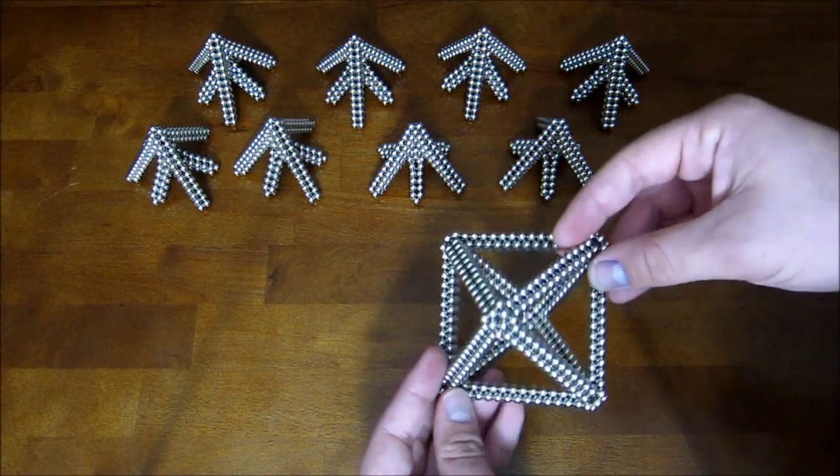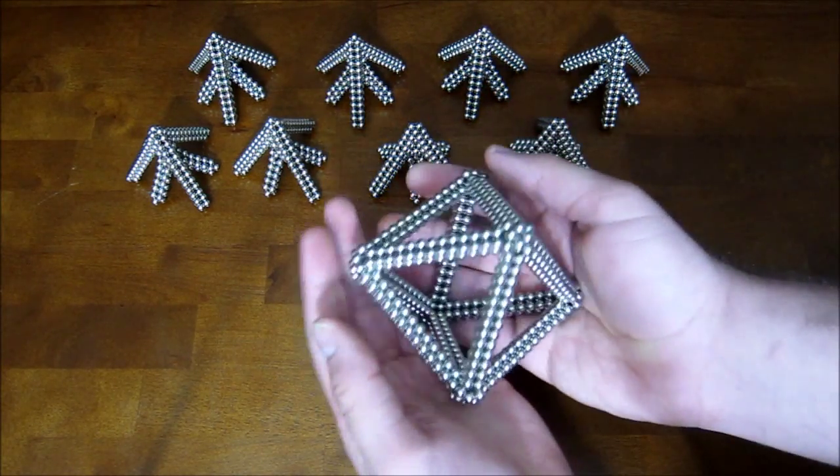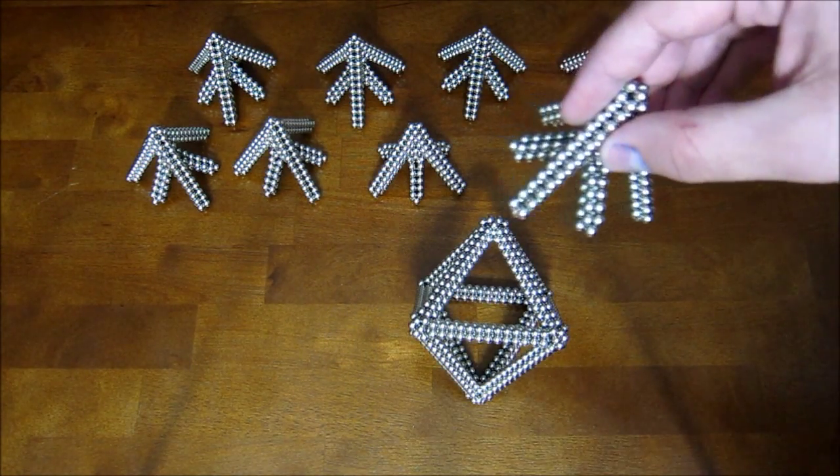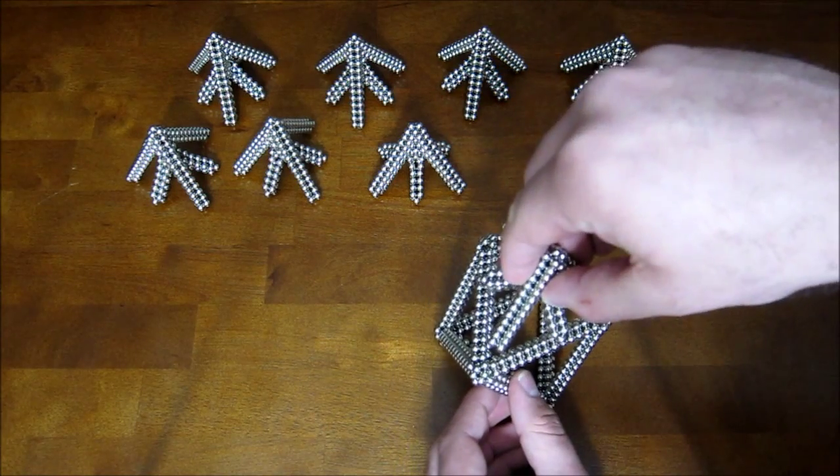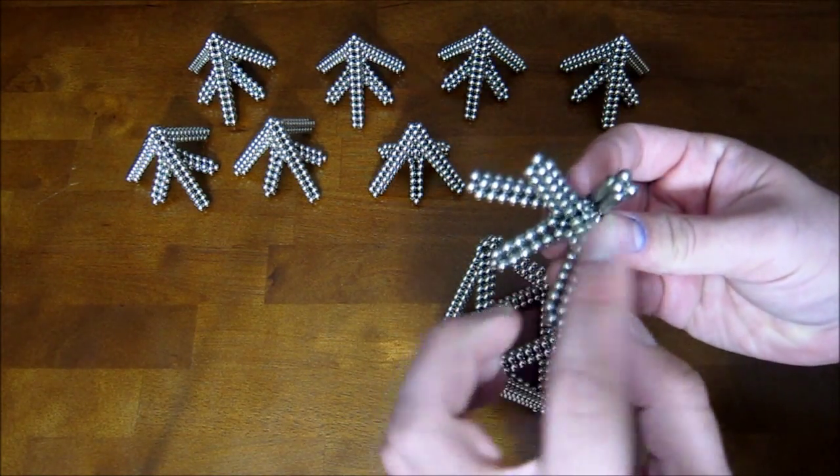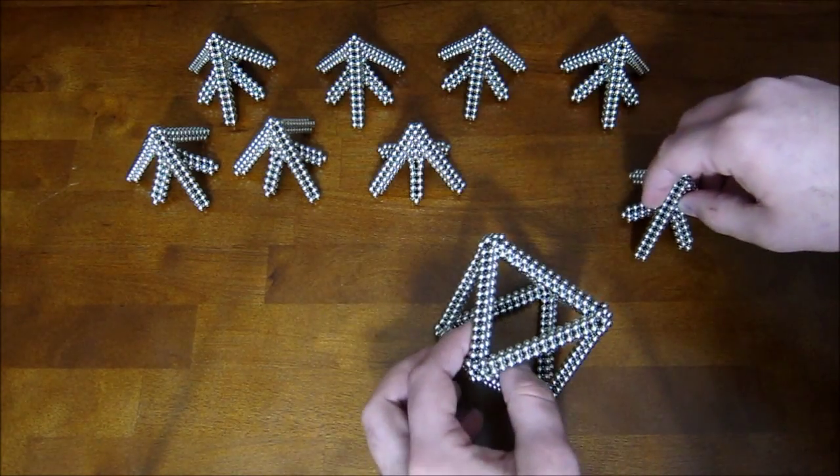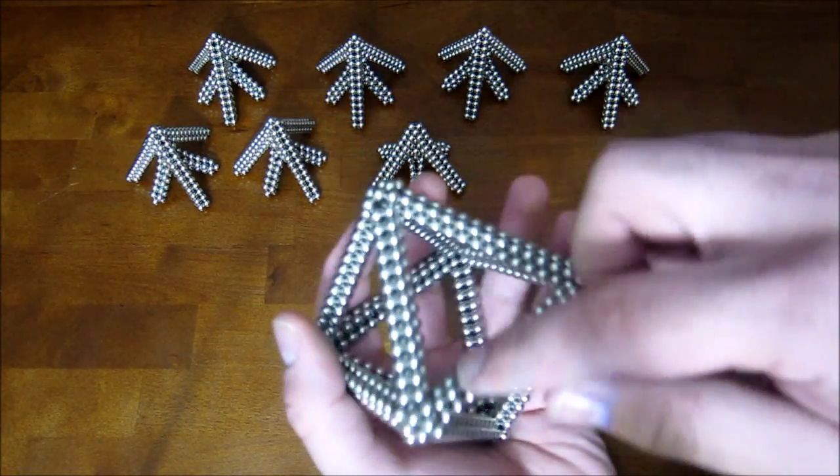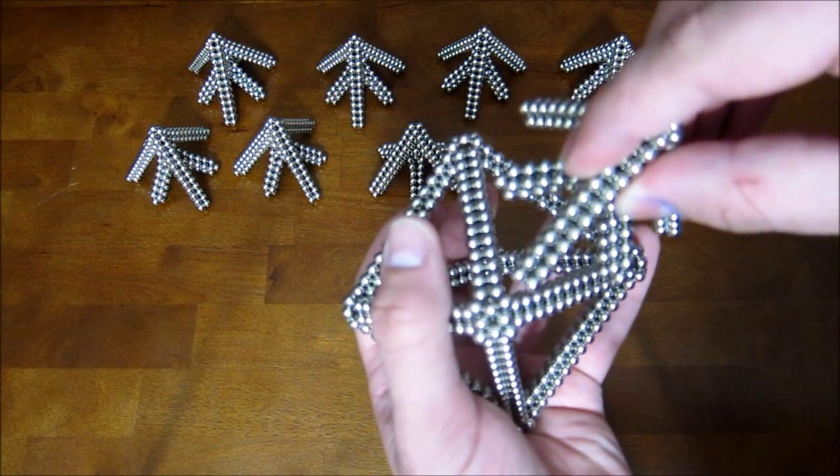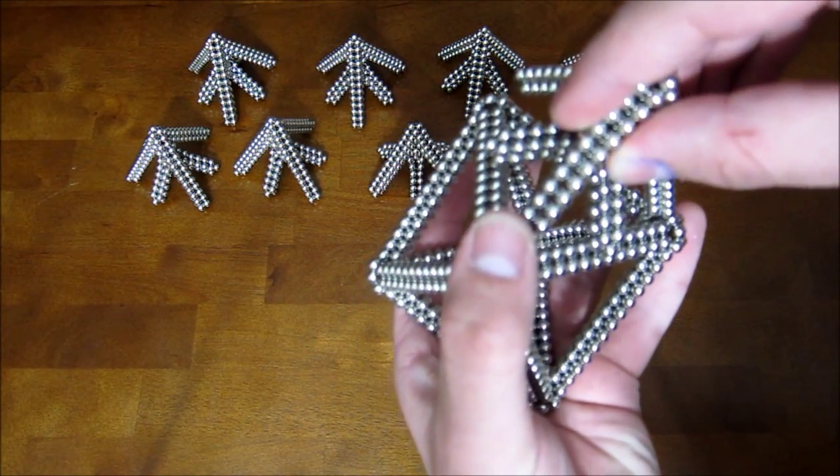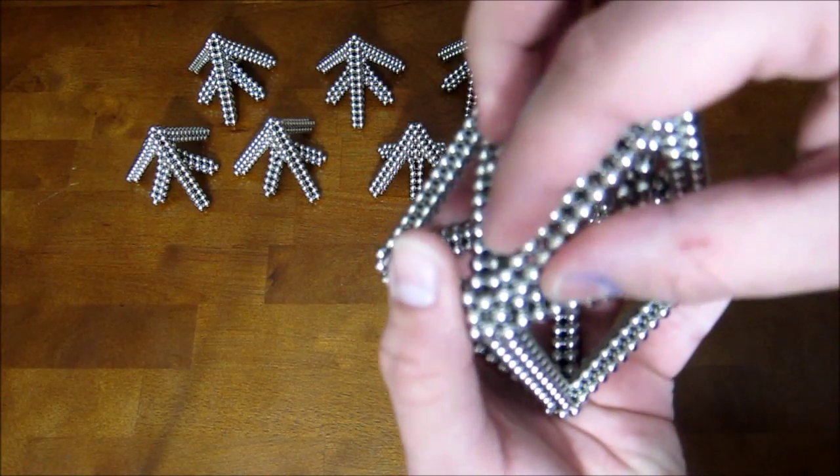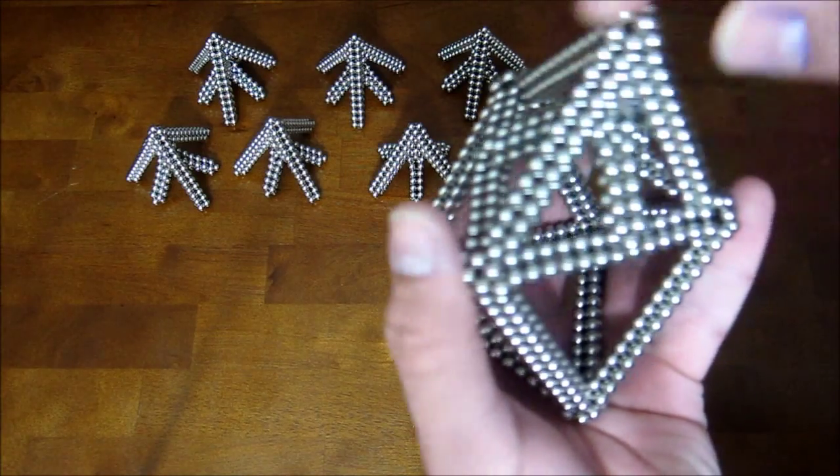And now you have an octahedron frame. The next thing you need to do is take one of these and set it down inside the triangle. And you want these three outer points to sit right on the inside of each of these corners. Just like that.